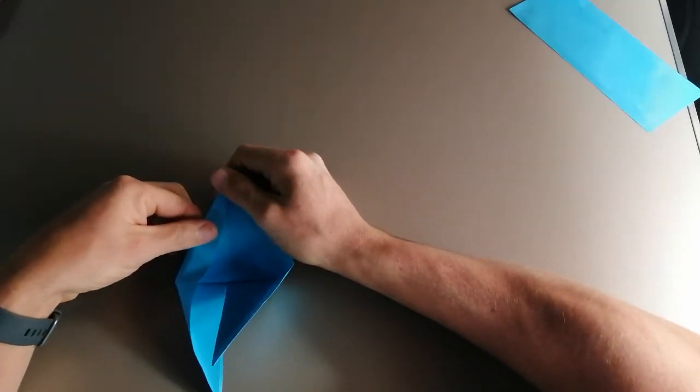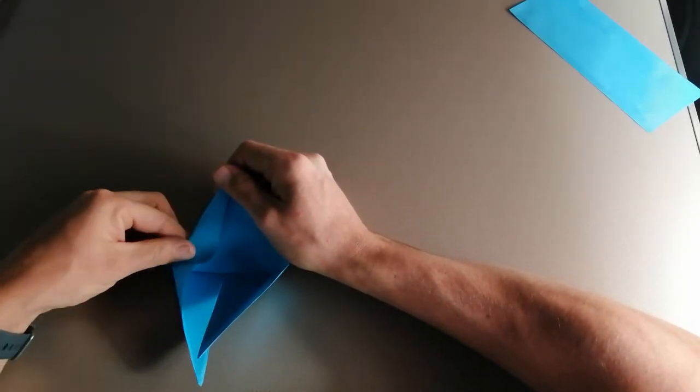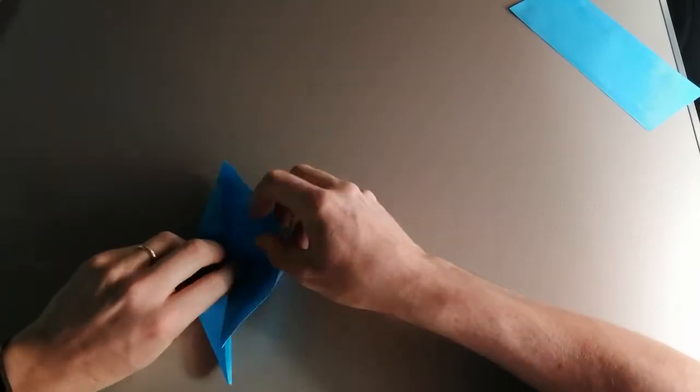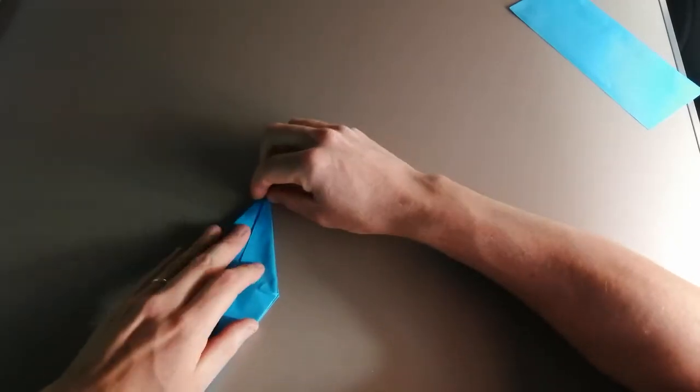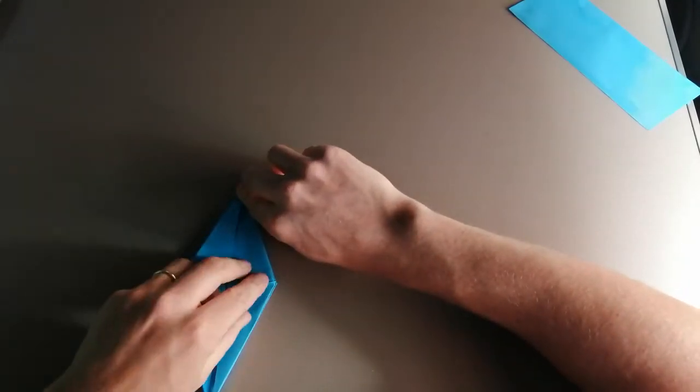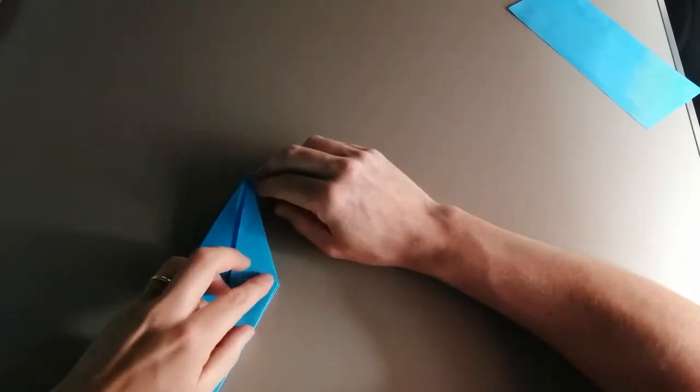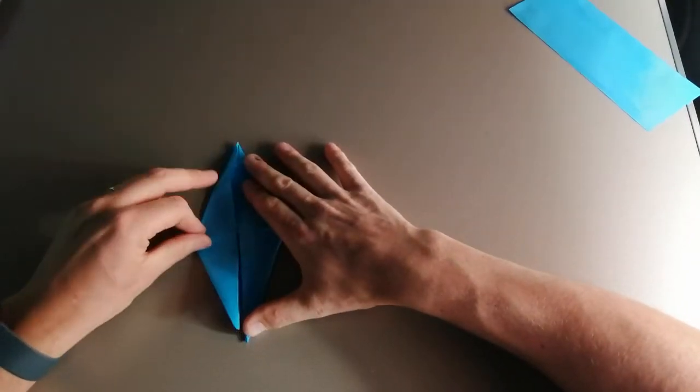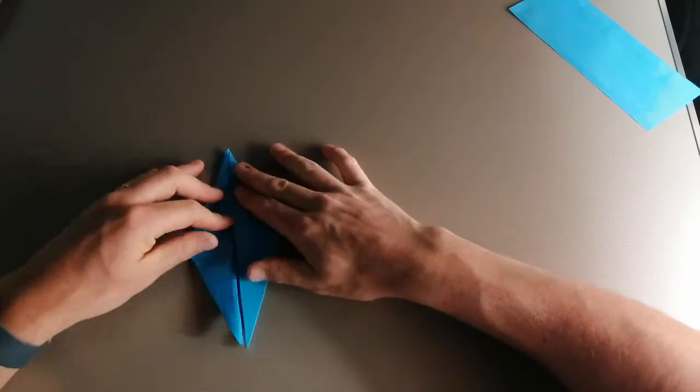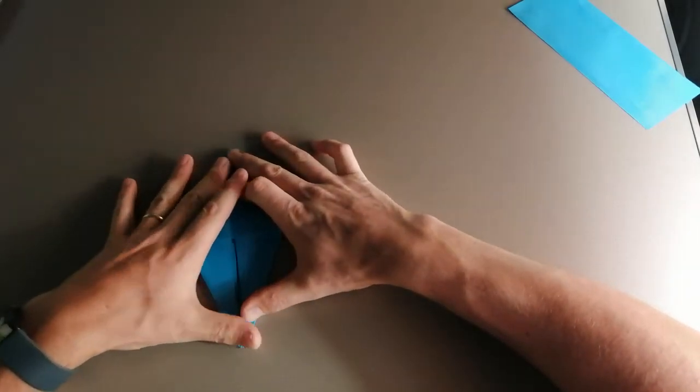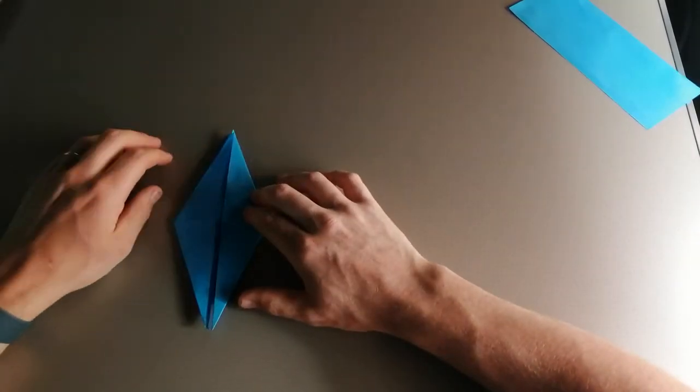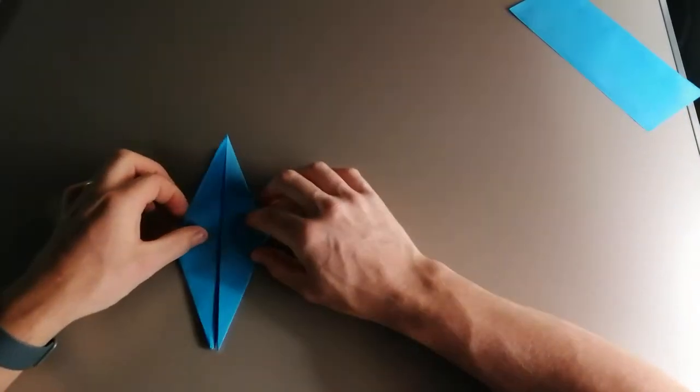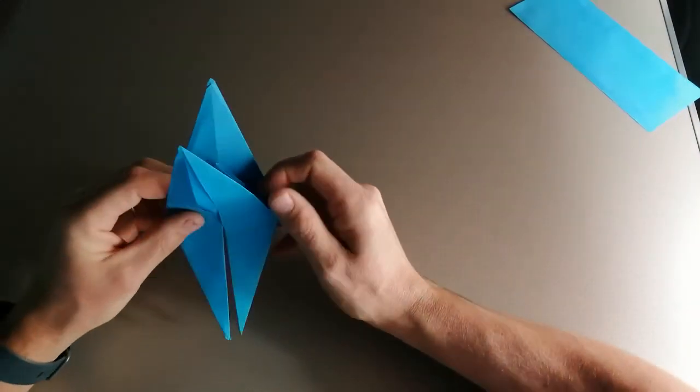This is why it's important to create strong crease lines, and then it's much easier to reverse them. The paper wants to go into the shape that you've created with your creases. So by making them firm and strong, it makes it much easier to create the shape that we're after. So I'm going to lift this up now.